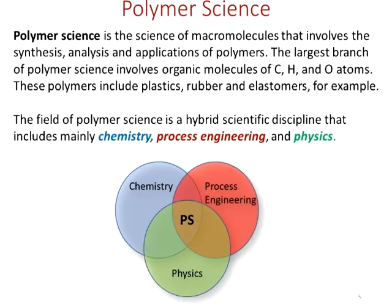Polymer science is the science of macromolecules — that means very large molecules — that involves the synthesis, analysis, and applications of polymers. In other words, polymer science is concerned about how the materials are made, how you characterize them and analyze that it is in fact the polymeric material, and how those polymers are used and what their applications are.